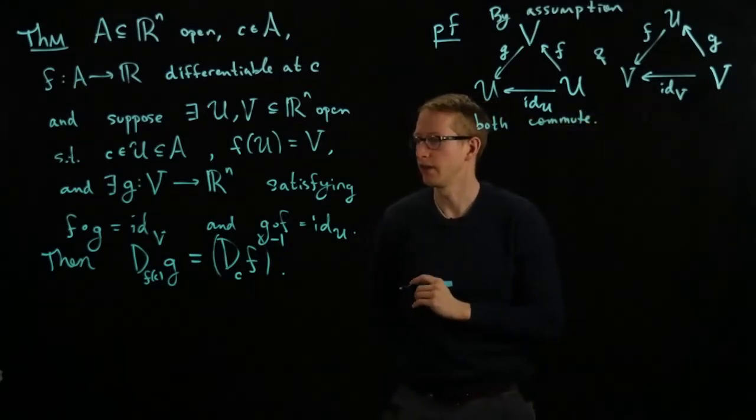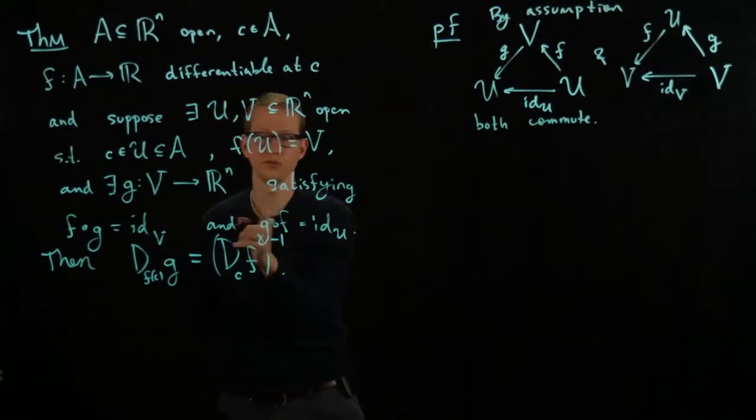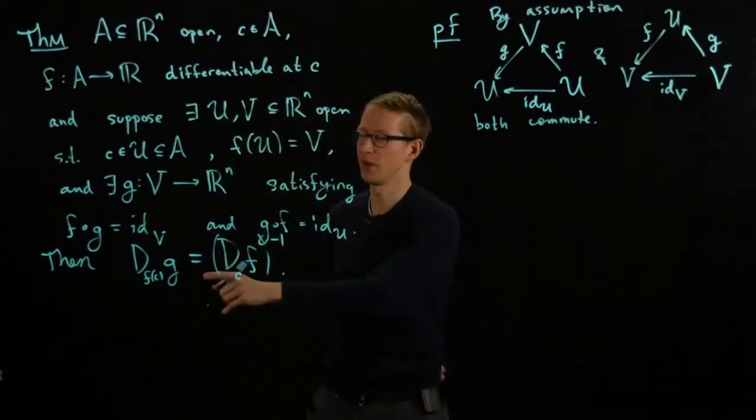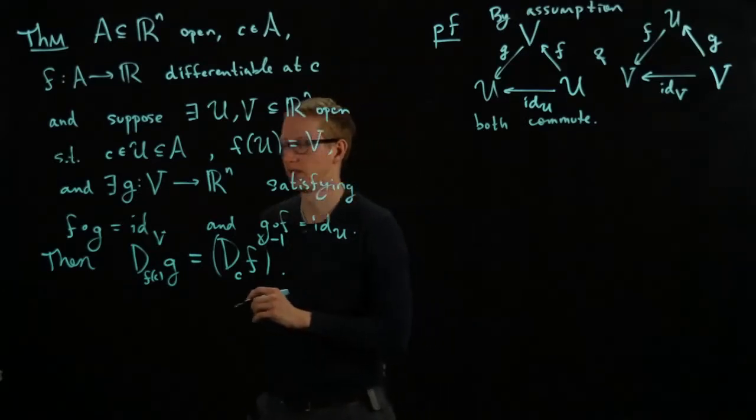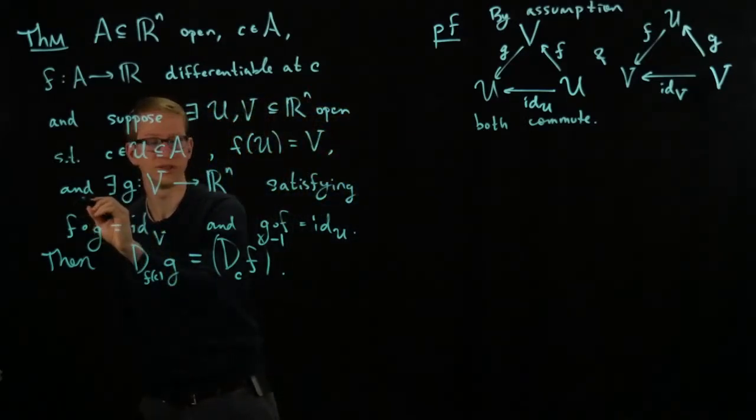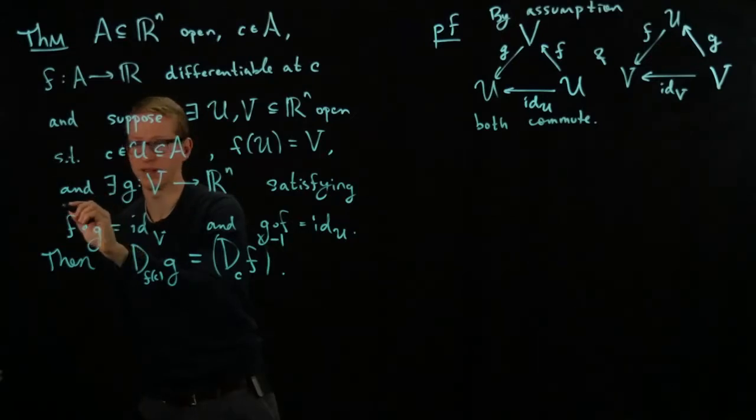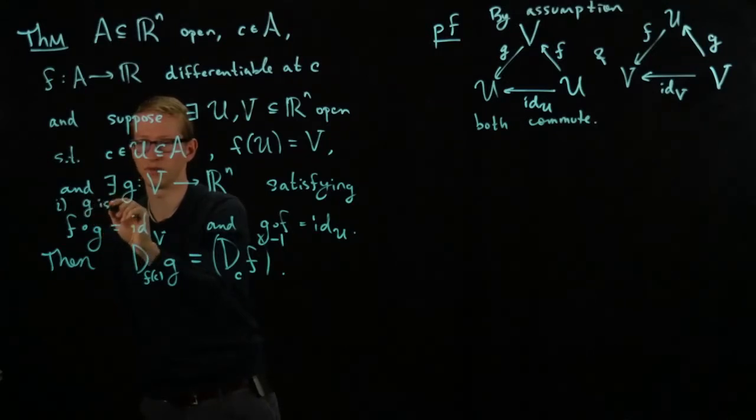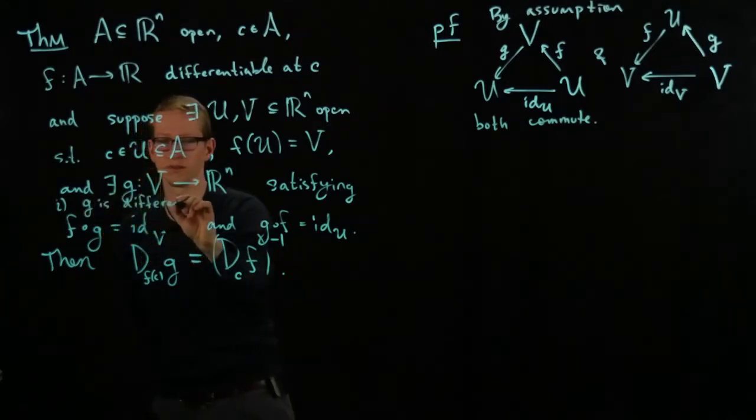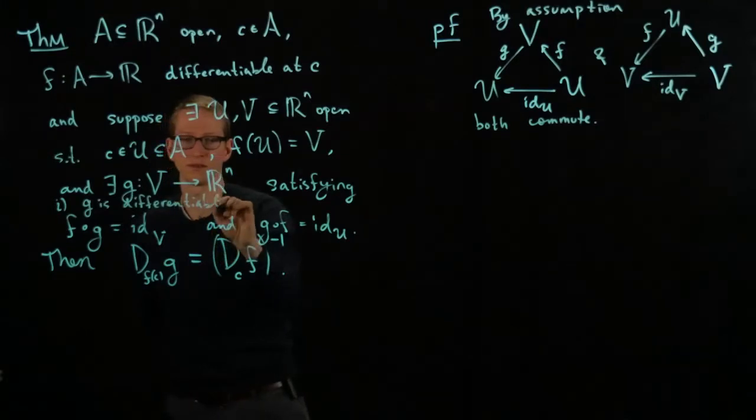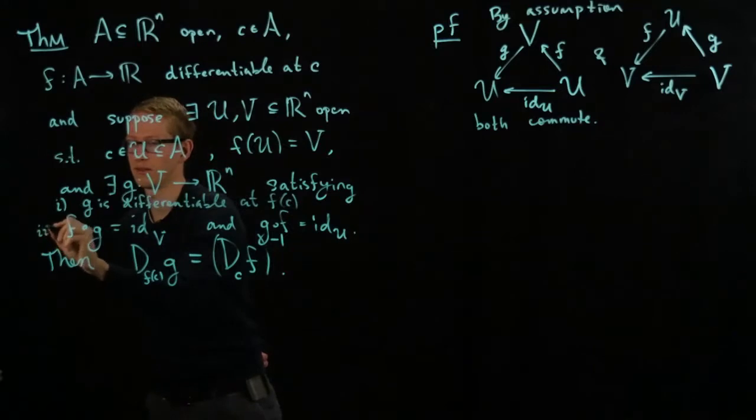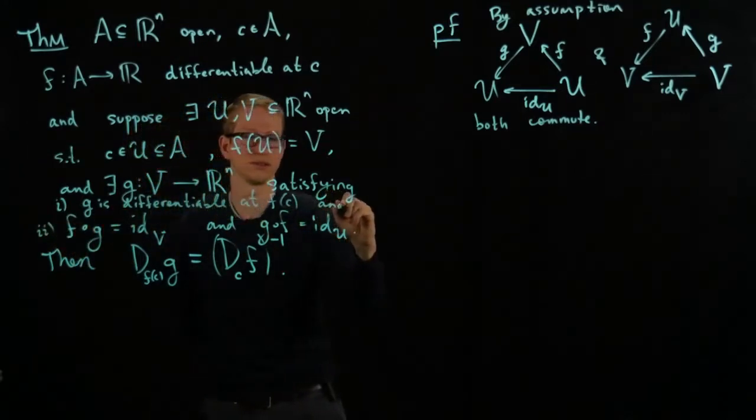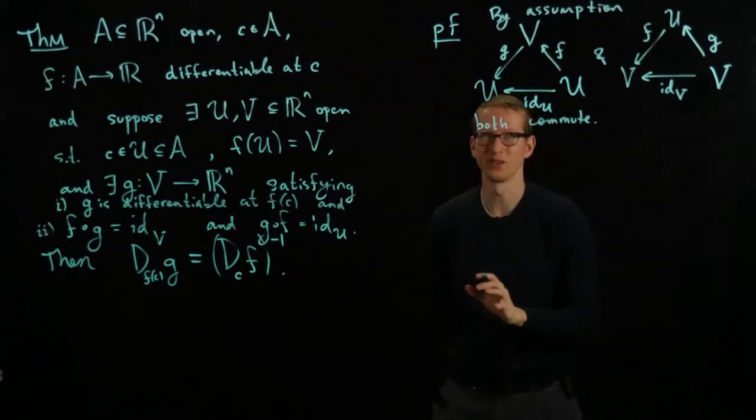And I forgot to mention here that not only do we assume that these functions are inverses of each other, but this equation wouldn't even make sense if we didn't assume that G was differentiable at F of C. So we should include that as well. Satisfying, first let's assume that G is differentiable at F of C, and these two conditions hold. Now the statement of the theorem makes sense.